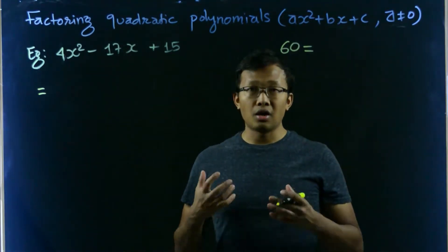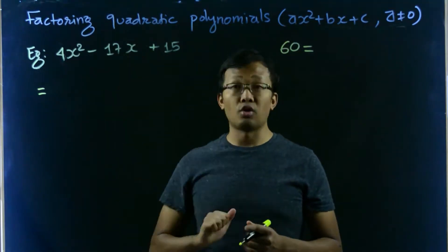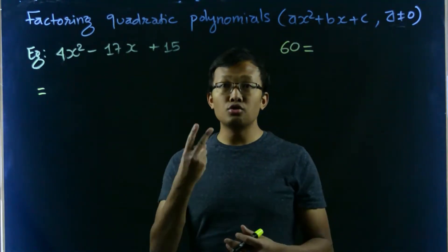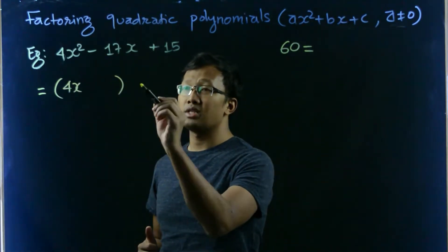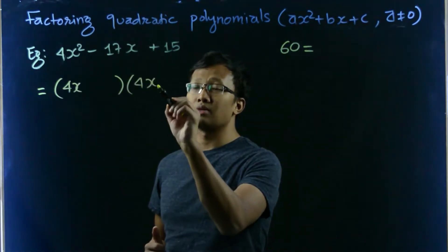So now we are confirmed that this quadratic polynomial can be factored into two binomials. Let's write down in this way. So 4x, leave some space here.